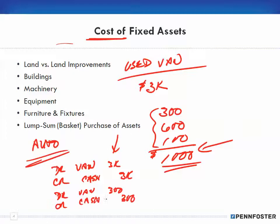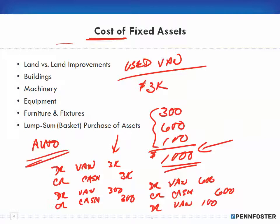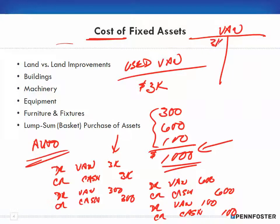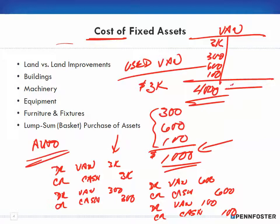As you receive those invoices, you debit van for $300 and credit cash; debit van for $600 and credit cash; debit van for $100 and credit cash. When you post all these journal entries, the van account totals $3,000 + $300 + $600 + $100 = $4,000. That $4,000 is the book value of the van — the amount you're going to depreciate.